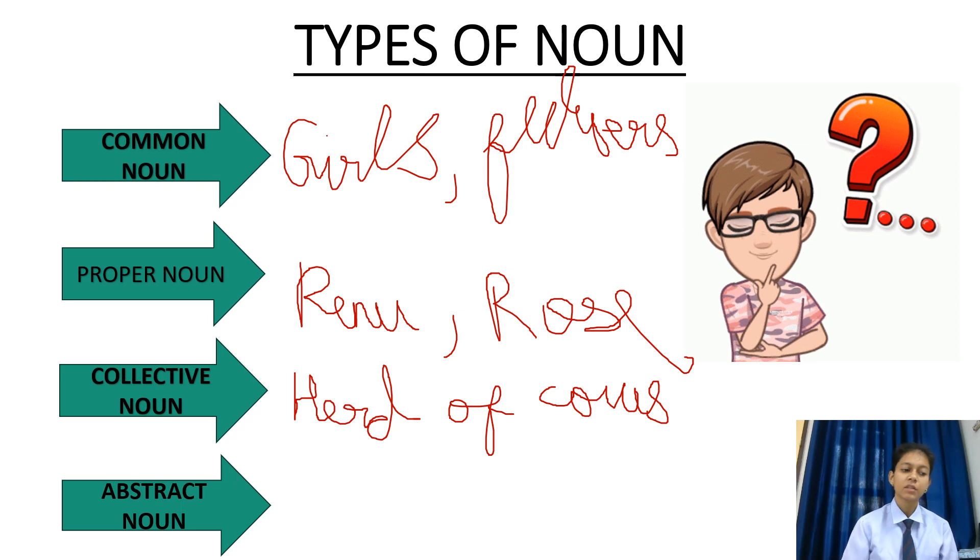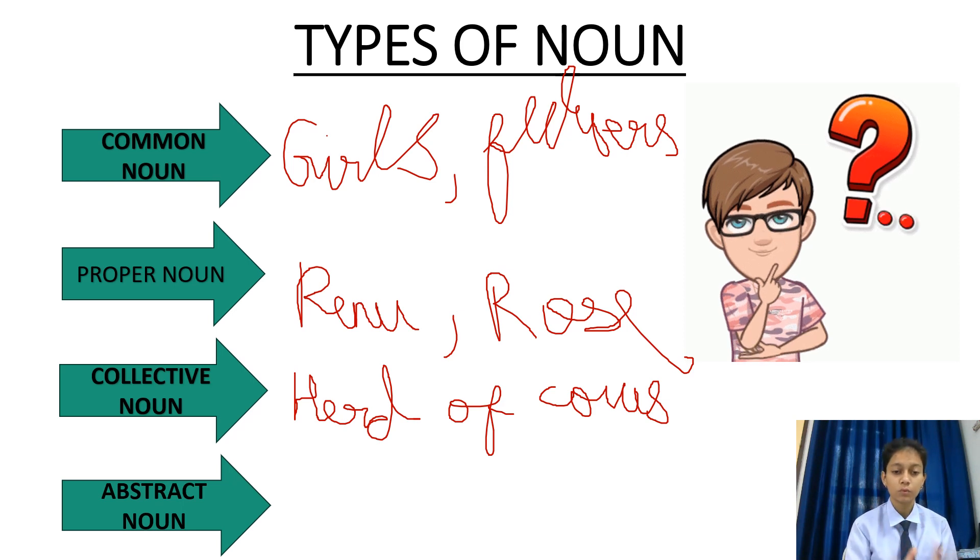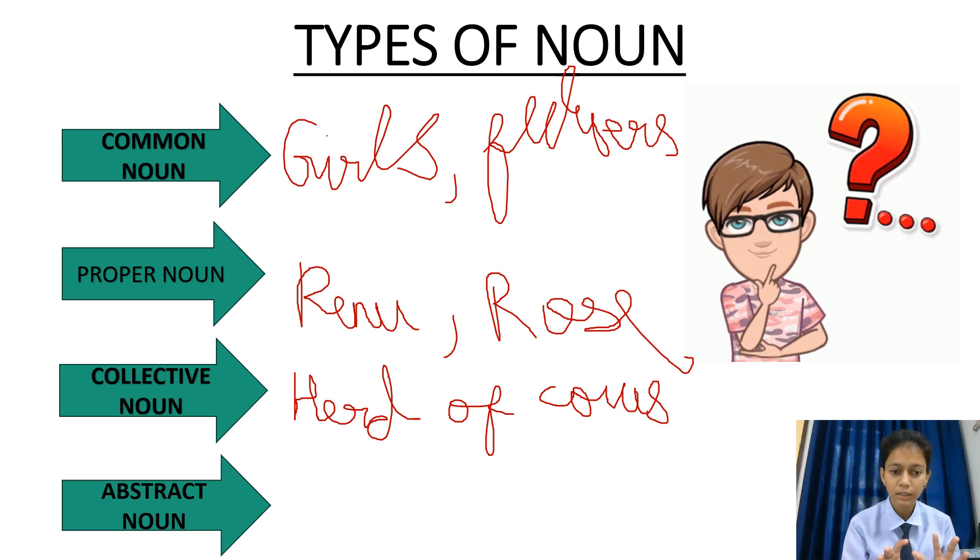Abstract noun. Abstract noun is a noun which includes feelings. We cannot touch or see. Abstract noun, we can only feel. For example, honesty. Honesty is the best policy.